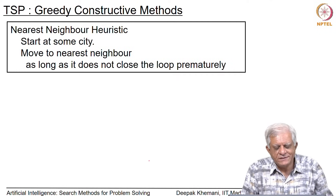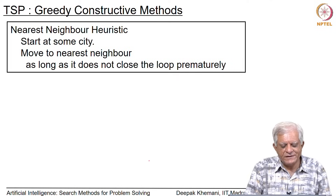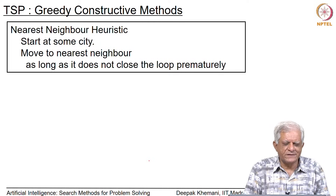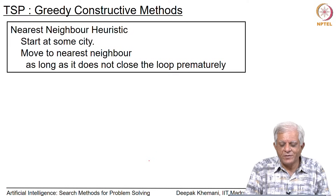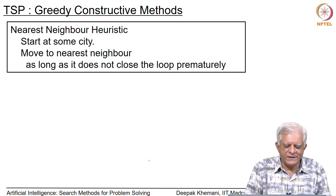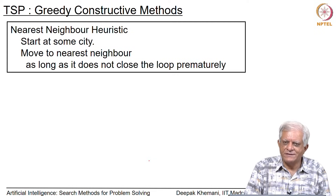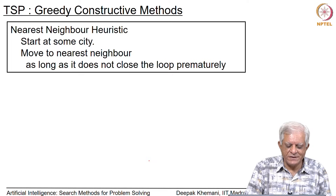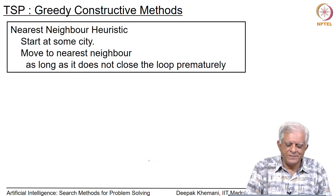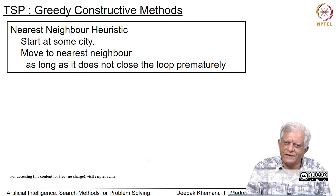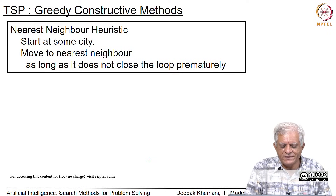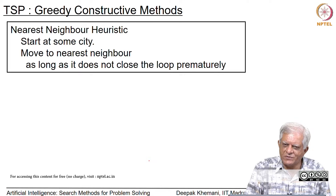Before we move on to perturbation methods, let us quickly look at the greedy constructive methods popularly used for solving TSP. The most intuitive and simplest is the nearest neighbor heuristic, which simply says: start at some city, move to the nearest neighbor, then move to the nearest neighbor from there, and keep constructing a tour.